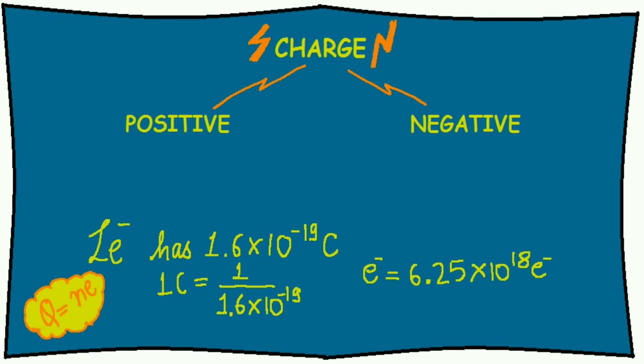This is a mind-boggling number. 6.25 × 10¹⁸ means there are 16 zeros after 625. We cannot even imagine that number.